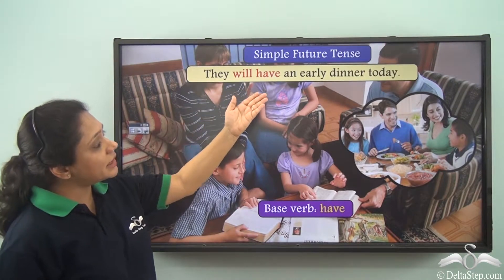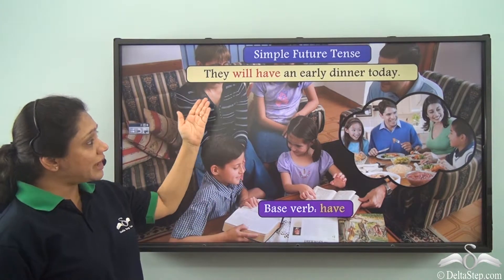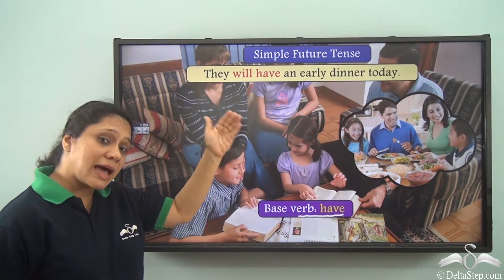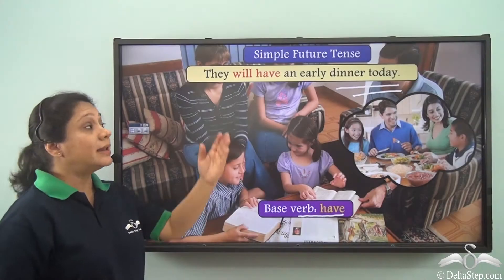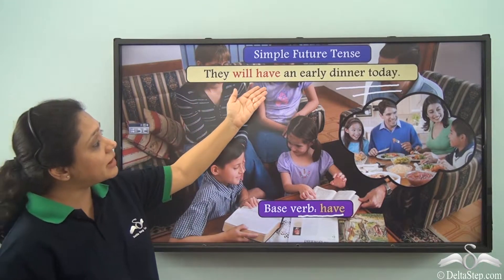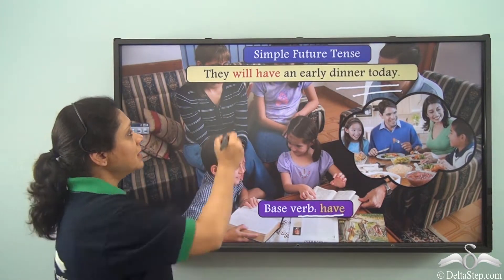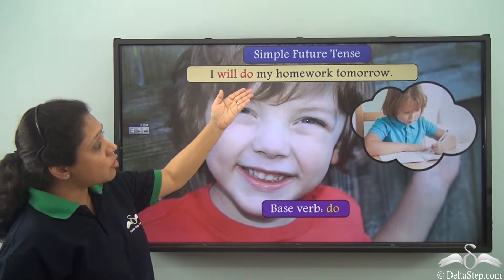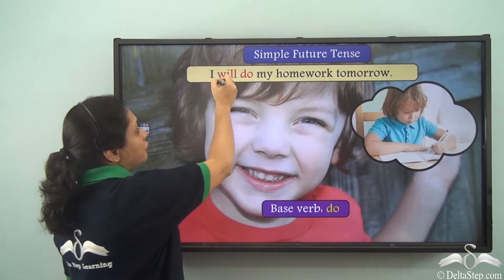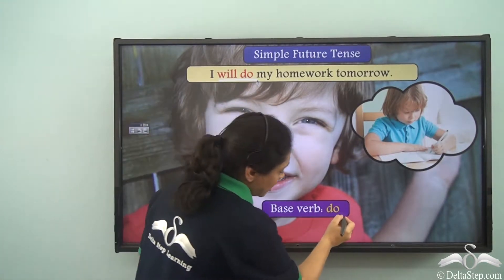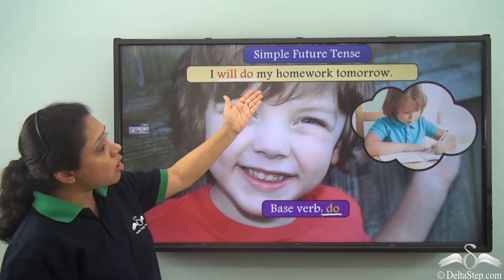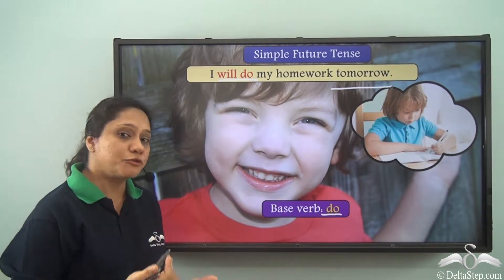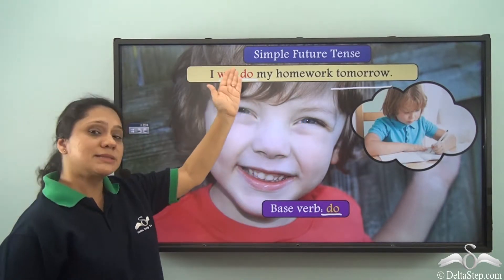We will have an early dinner today — this sentence is in the simple future tense. I will do my homework tomorrow. The verb here is 'will do,' formed from the base verb 'do.' So 'I will do my homework tomorrow' is telling us something that will happen later in the future, so this sentence is also in the simple future tense.